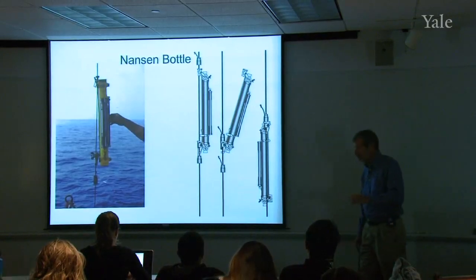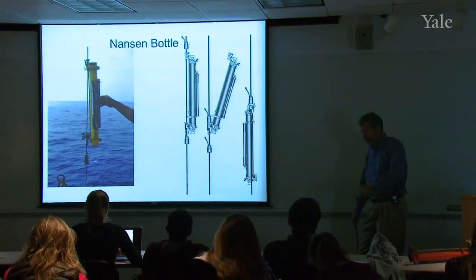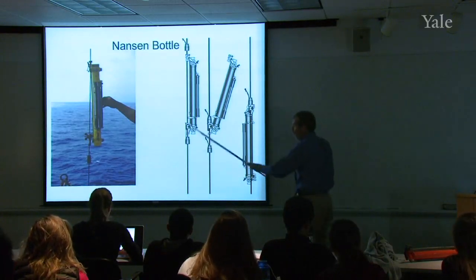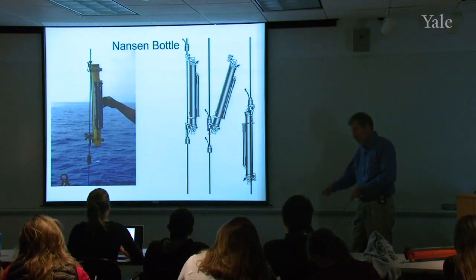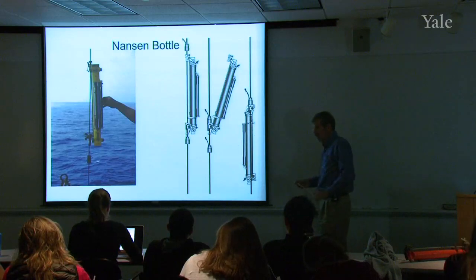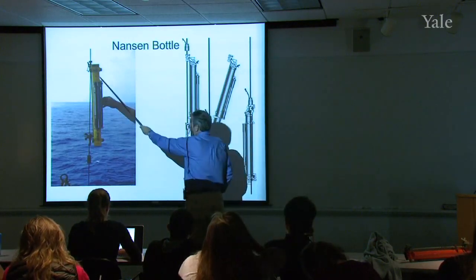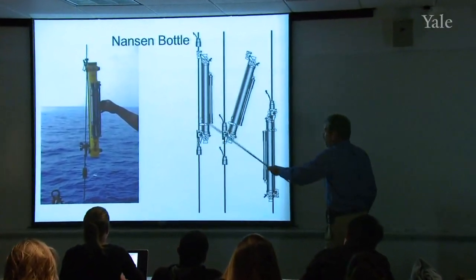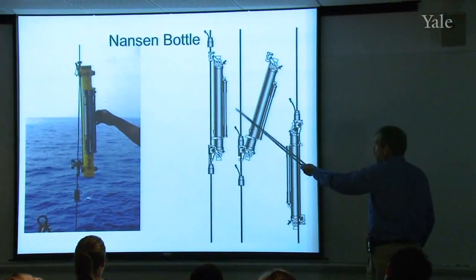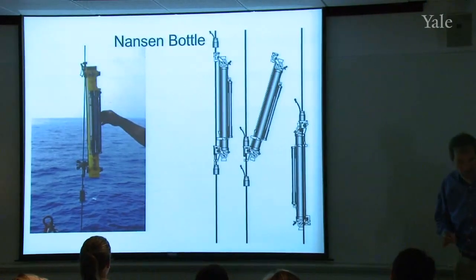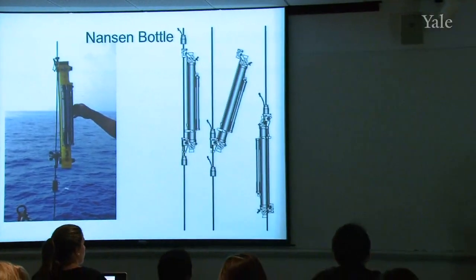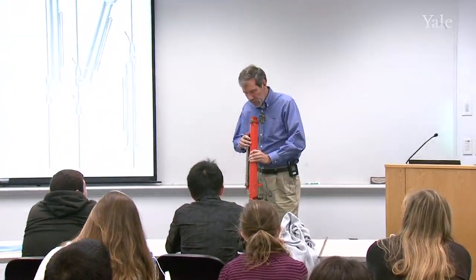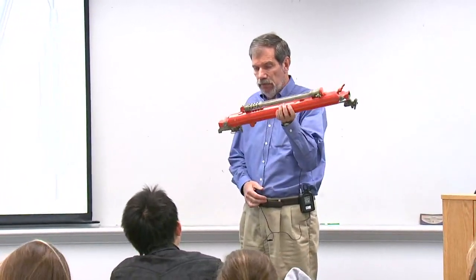Now I want to tell you about how we measure ocean properties down into the ocean. For about 50 years, the predominant way for sounding the ocean — getting temperature and salinity profiles with depth — was the Nansen bottle. Here's a picture of one mounted on a cable that's about to be put down into the ocean, and here's a cartoon of what happens after it's triggered so that it tips over and the valves close.